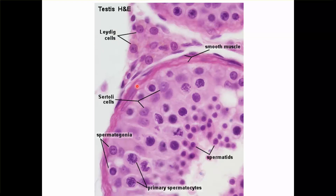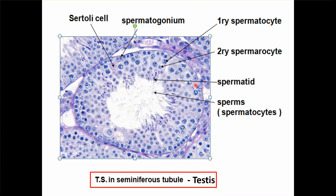This is smooth muscle. These are pale cells which are Sertoli cells within the seminiferous tubules. Here you can see the different stages of sperm formation. You have the spermatogonia towards the base, then the primary spermatocyte which is large in size, then secondary spermatocyte, then the spermatid, and then the sperms with the tail towards the center.